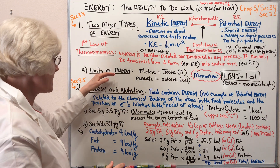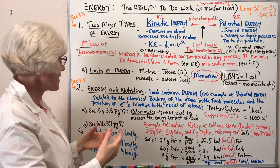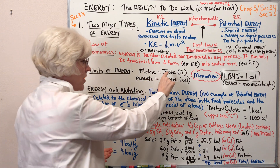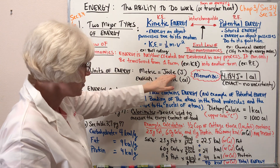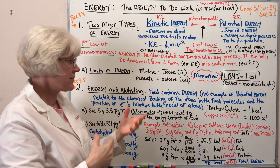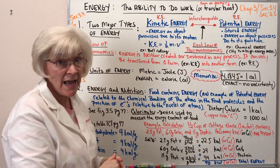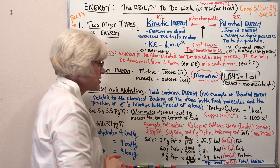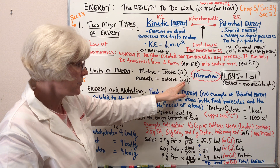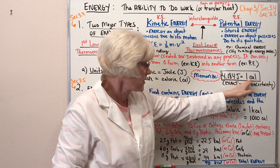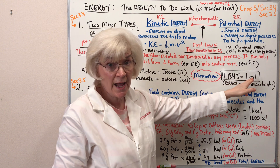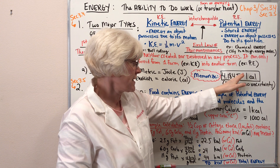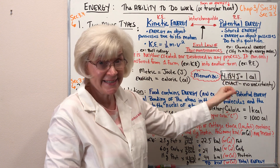Let's look at how we can quantitate and measure energy. The metric unit is the joule, spelled J-O-U-L-E, named after the scientist whose work led to a better understanding of these concepts, abbreviated with a capital J. The English unit is the calorie, abbreviated lowercase cal. You can interconvert between joules and calories: 4.184 joules equals one calorie exactly.